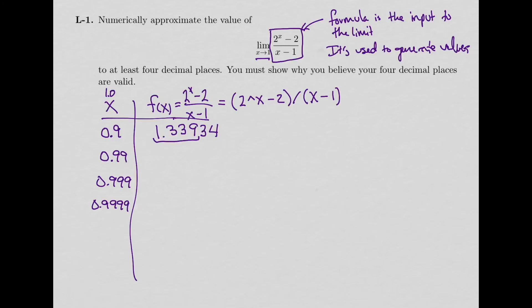I'm going to now do the 0.99 into my formula. So I have 2 to the power of 0.99, minus 2, and I'll divide it by 0.99 minus 1, and this time I get 1.3815009. So notice this time, at 4 decimal places, I'm at 1.381. And I'm still changing, so my 4 decimal places are not the same as I had before. I'm still changing.